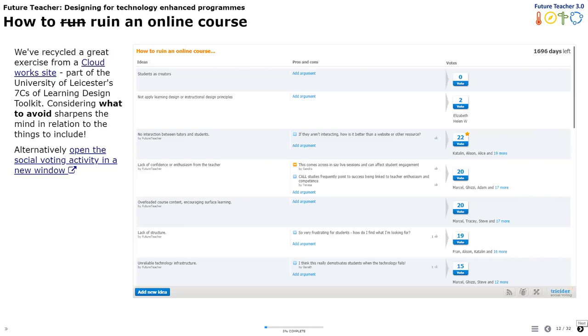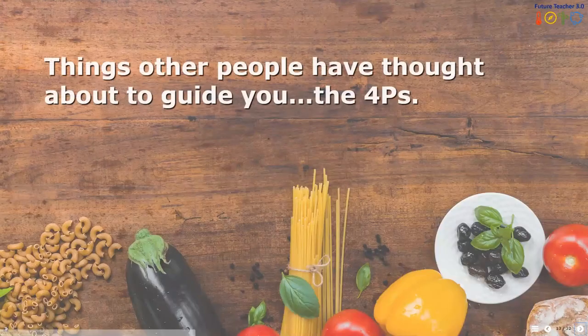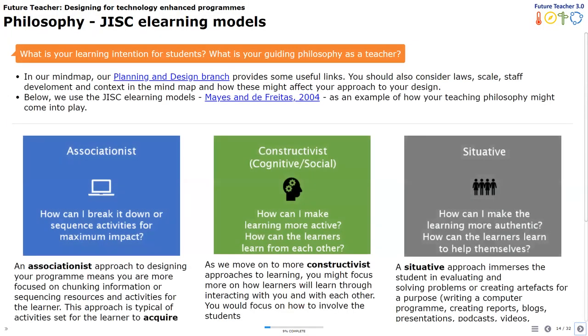We've ended up with — I think the most popular thing is no interaction between tutors and students as a way of ruining an online course. Moving on to the next slide, we're going to talk briefly about some concepts for designing a technology-enhanced program — this will underpin all that our guest speakers will talk about later. We've decided to call it the Four P's: Philosophy, Psychology, Process, and Production.